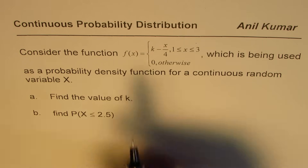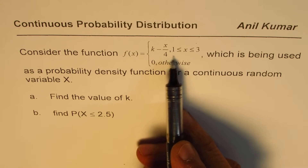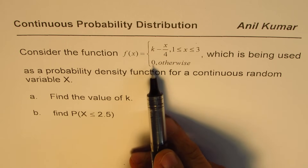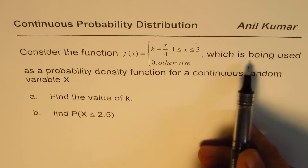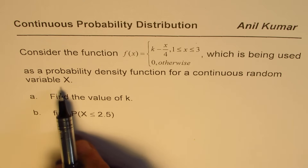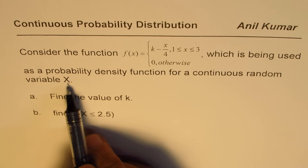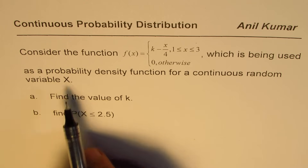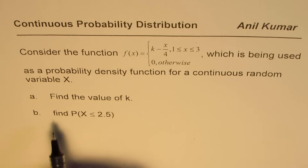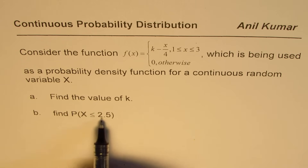The question here is: consider the function f(x) equals k minus x over 4, for x between 1 and 3, and equals 0 otherwise. This is being used as a probability density function for a continuous random variable X. You need to find the value of k, and the second part of this question is: find the probability that the random variable X is less than or equal to 2.5.